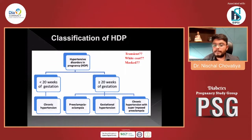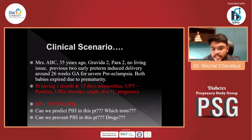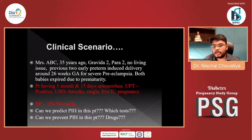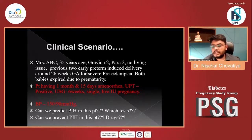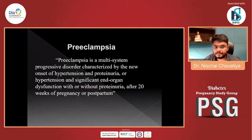Let's start with Case 1: Mrs. ABC, 35 years of age, gravida 2 para 2, no living issues, previous two early preterm induced deliveries around 26 weeks of gestational age for severe preeclampsia — both babies expired due to prematurity. Now the patient has one month and 15 days of amenorrhea, UPT positive, ultrasound showing six weeks live intrauterine pregnancy, blood pressure of 150/90. Can we predict PIH in this patient, which tests are to be done, and can we prevent PIH?